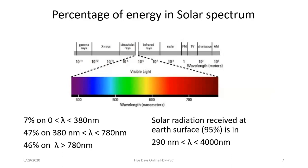In the solar spectrum, only 7% of energy is in the ultraviolet range (below 380 nm), 47% is in the visible spectrum (380–780 nm, violet to red), and about 46% is in the infrared range (above 780 nm) as heat radiation. We can utilize solar energy both in the form of light and in the form of heat.